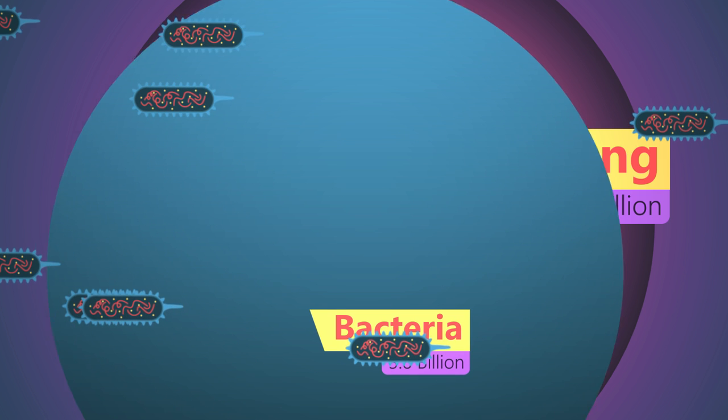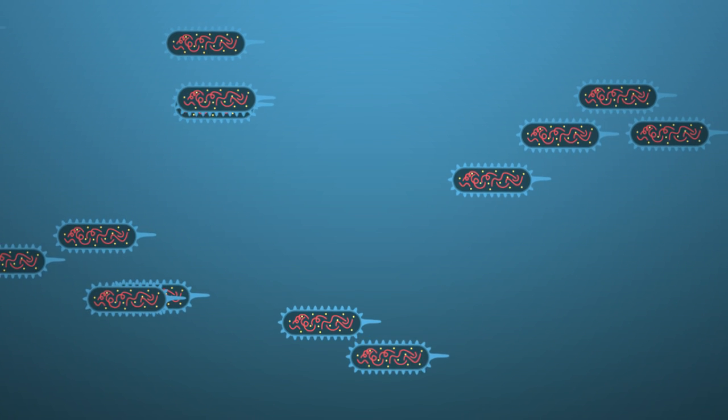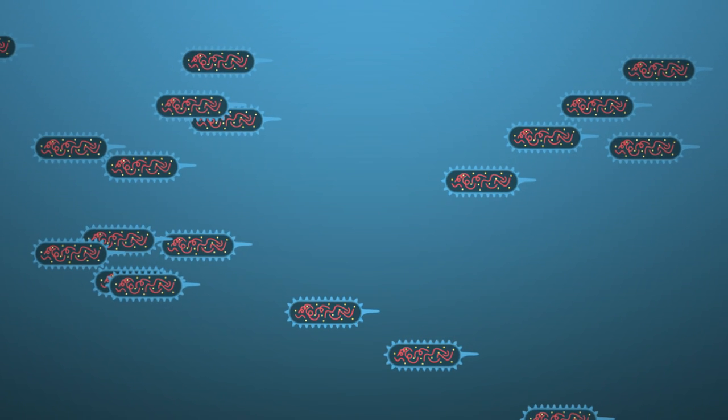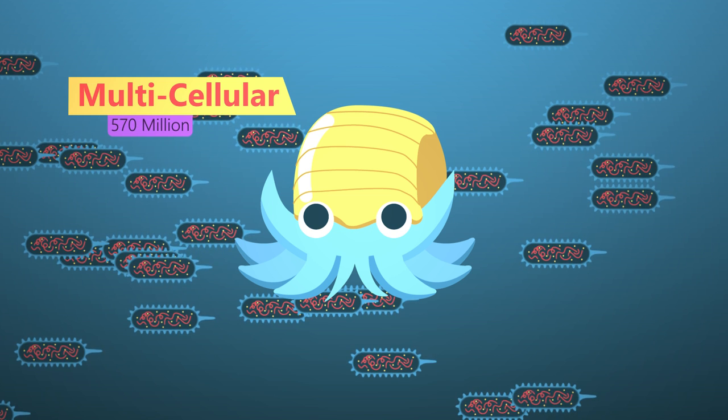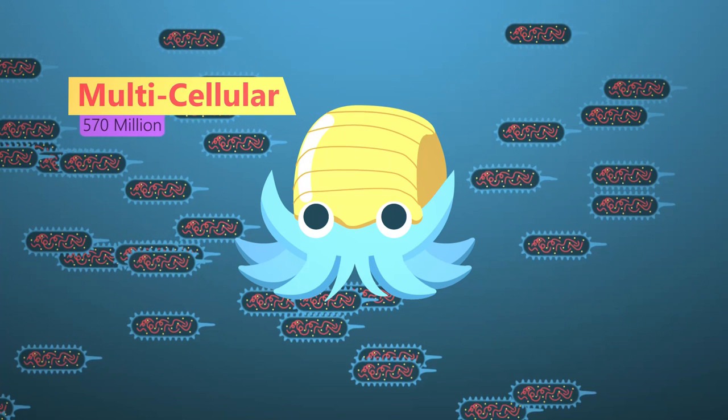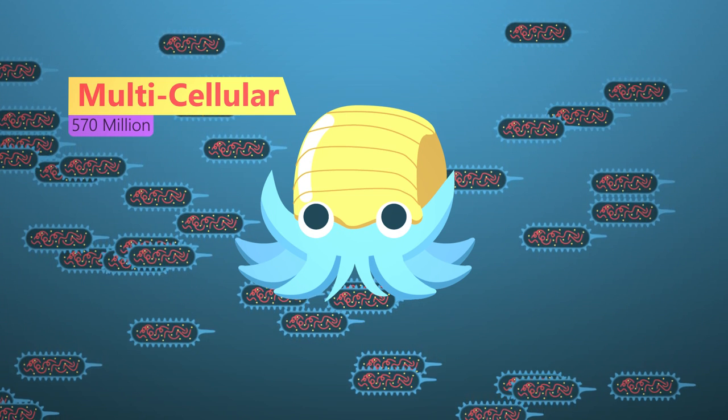These were single-celled prokaryotic cells such as bacteria. Multicellular life only evolved over one billion years later, and it's only in the last 570 million years that life forms we are familiar with started to evolve.